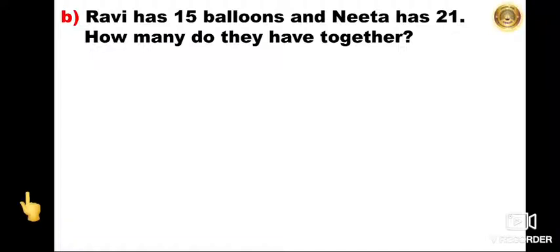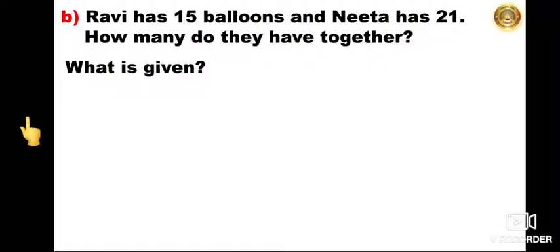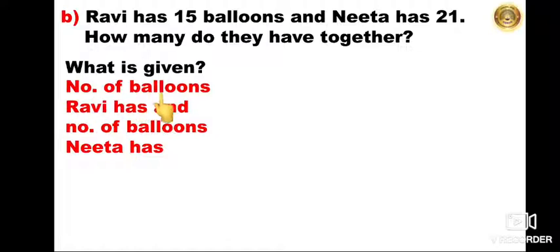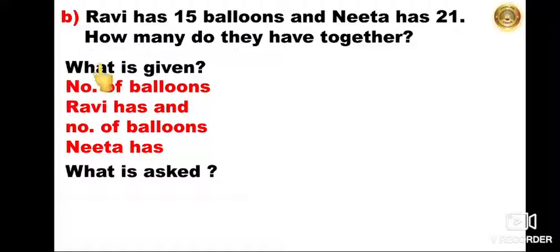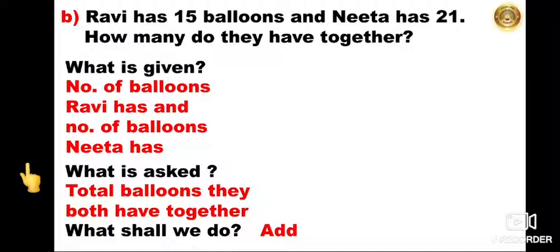Now we have to read the information given first. Ravi has 15 balloons and Nita has 21. How many do they have together? First we have to read the problem carefully. What is given? The number of balloons Ravi has and the number of balloons Nita has. What is asked? How many do they have all together? So the total number of balloons they have all together. As we have to find the total number of balloons together, we have to add.